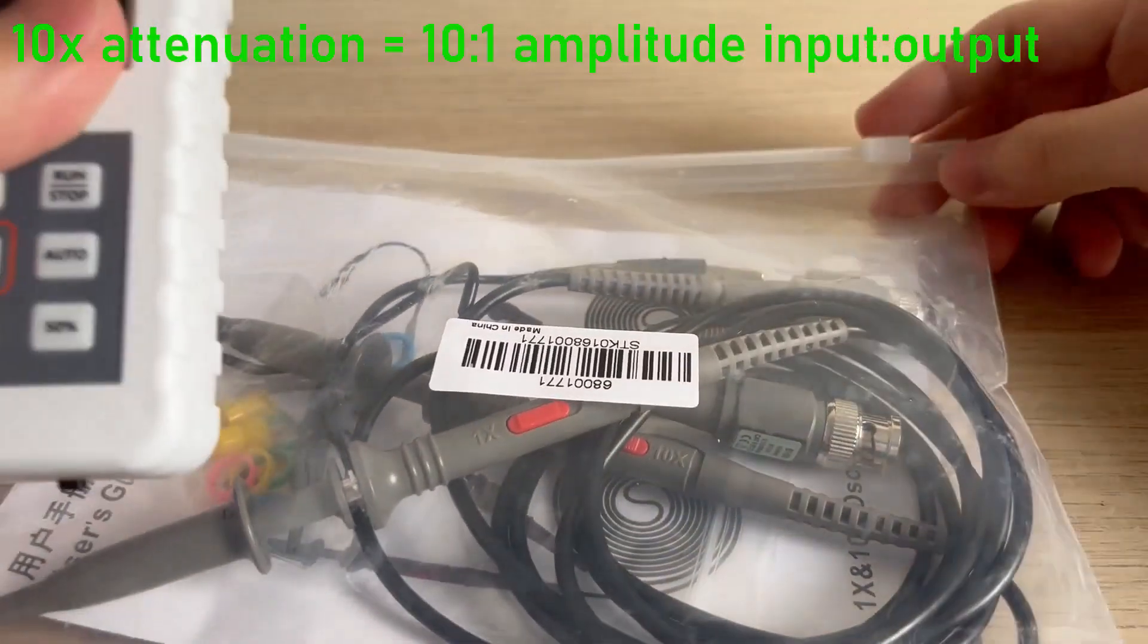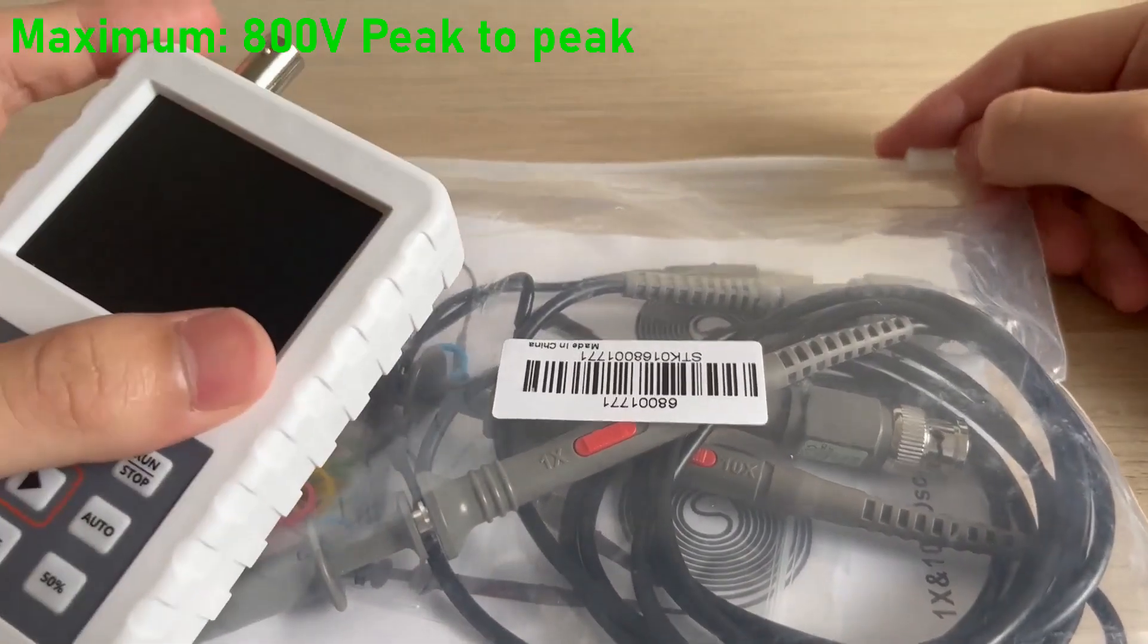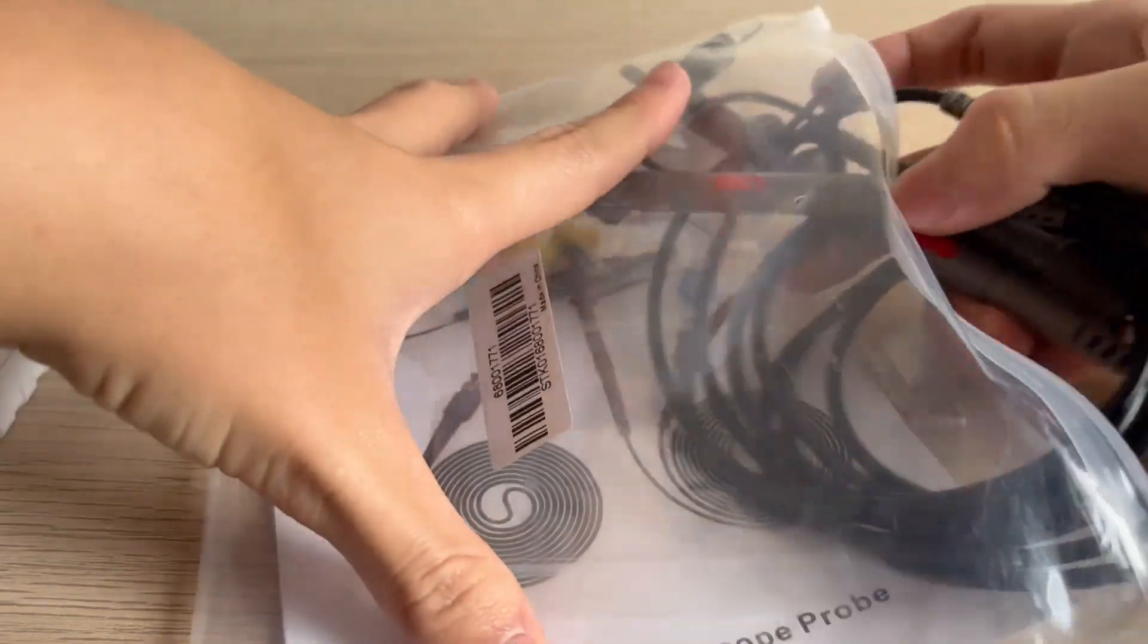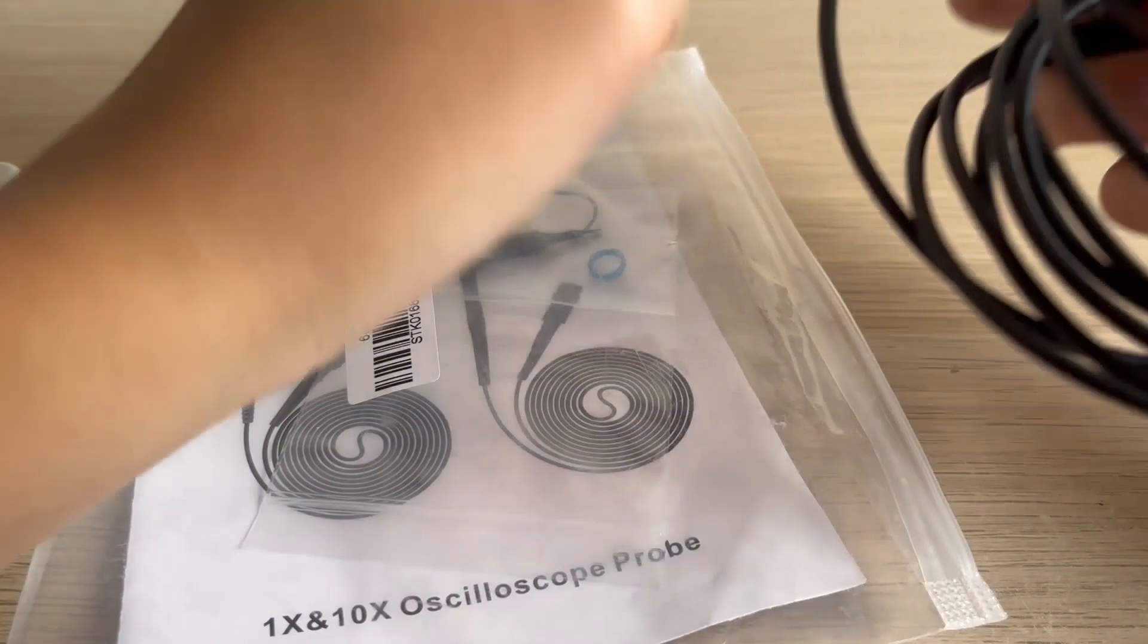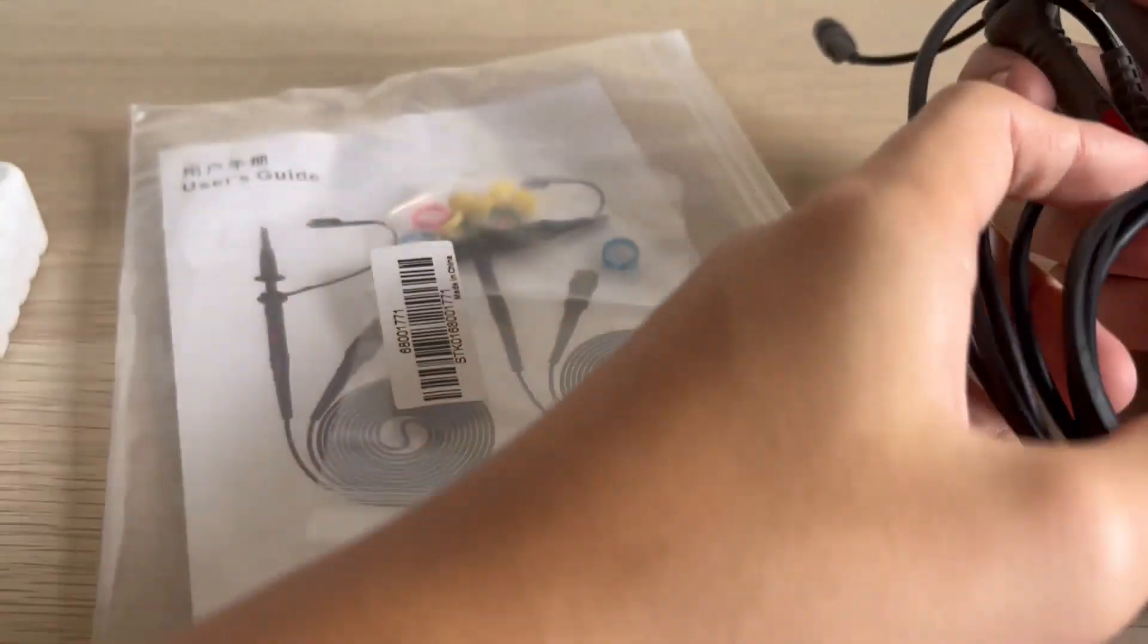These oscilloscope probes can measure 10 times attenuation which means 800 volts for this oscilloscope. You can see that it has two oscilloscope probes in the packaging which can be set to one times or 10 times the attenuation for different voltage measurements and different sensitivity.